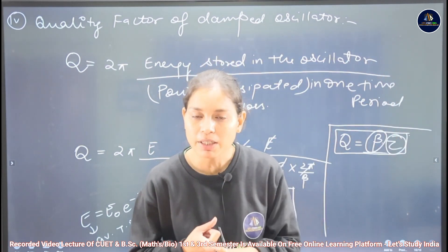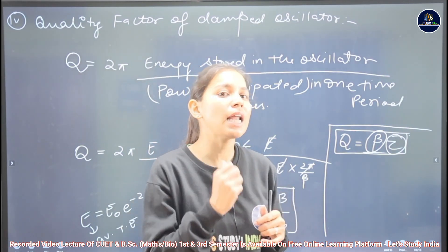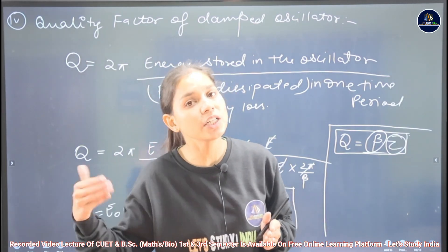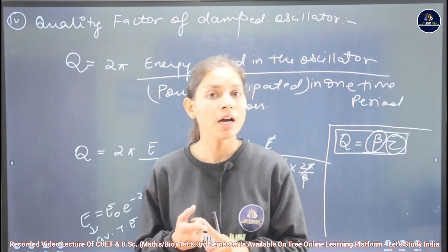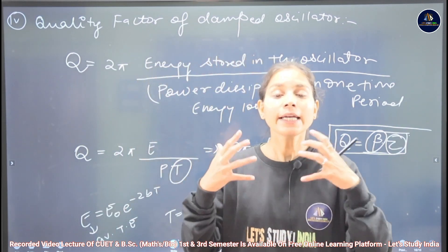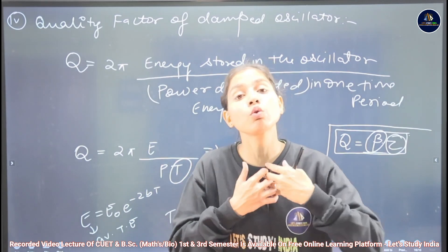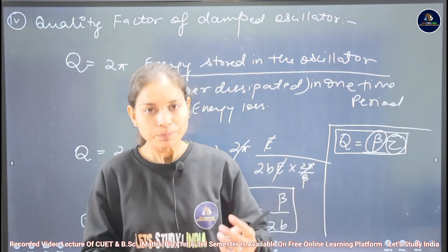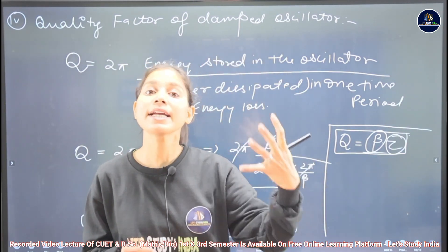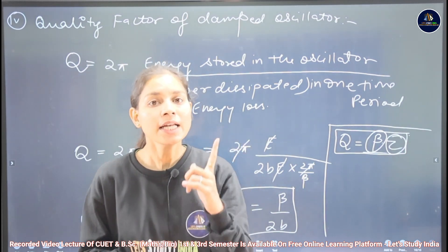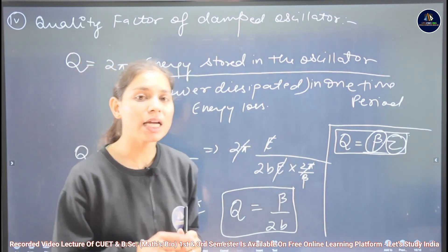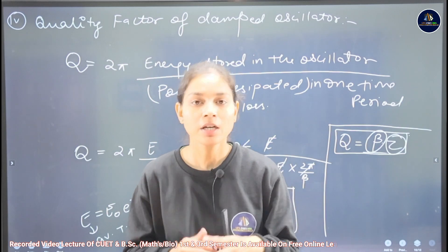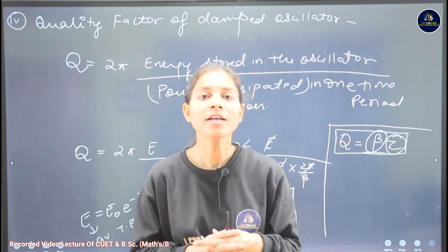So these are all the things in quantitative measurement of damping effect, where we have seen: logarithmic decrement describing the rate of amplitude reduction in damped oscillation; power dissipation showing the energy loss in the system; relaxation time τ = 1/2b; and quality factor Q = β·τ. Thank you so much, and we'll see you in our next video.